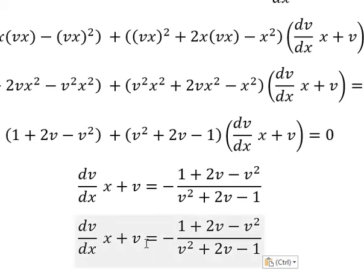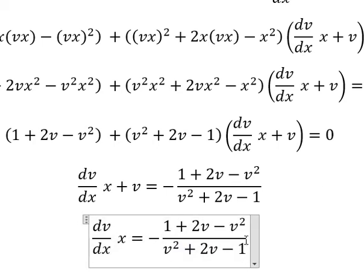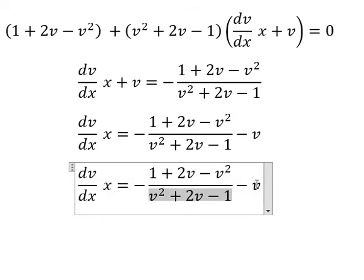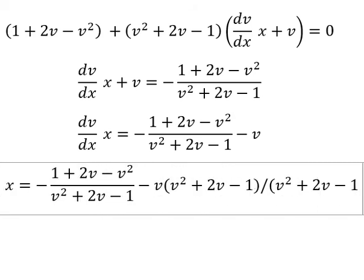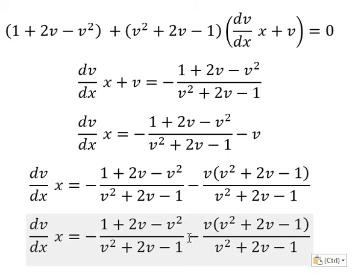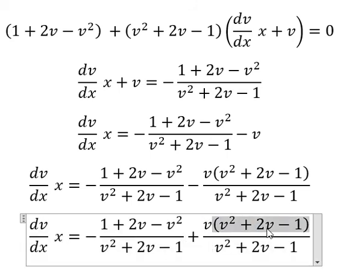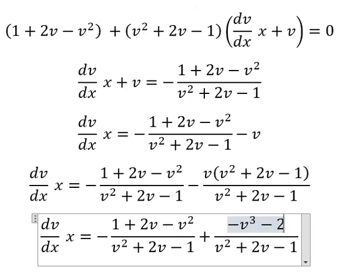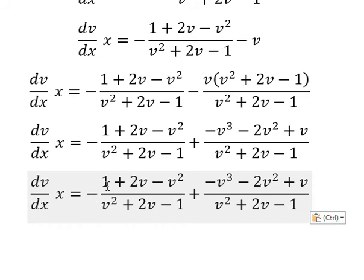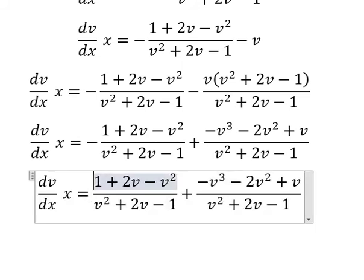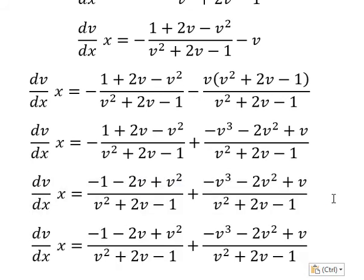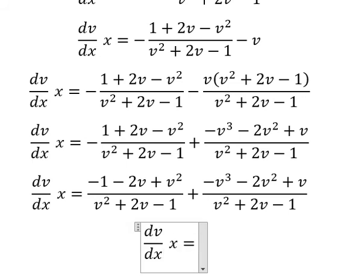Next we put v on the right, giving negative v. Then we do a common denominator, multiplying by this term. So negative v multiplied by v squared plus 2v minus 1. We have the negative side put to give 1 plus 2v plus v squared — we have a negative here, so we put it to number 2. We will need to use v squared plus 2v minus 1.